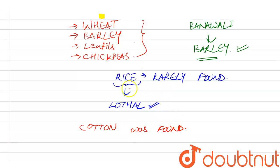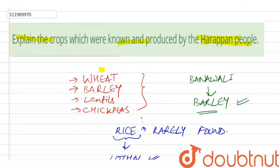So, these are basically the crops that the Harappan people used to grow: wheat, barley, lentils, chickpeas. These are mainly the crops that were known and produced by the Harappan people.